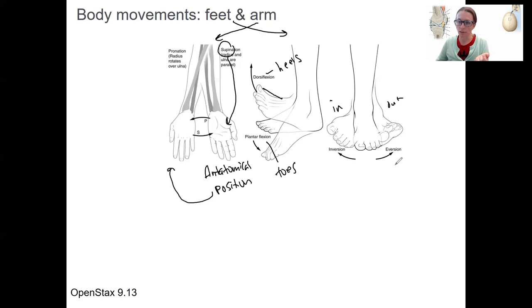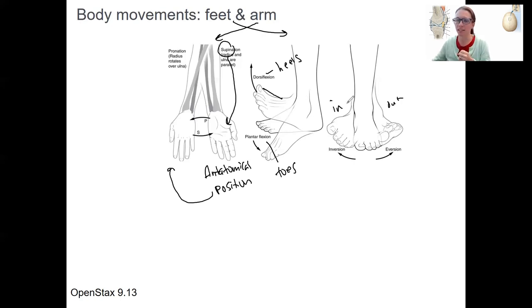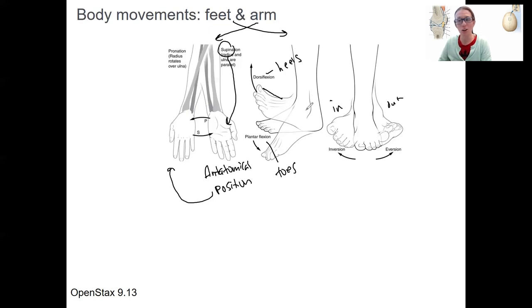It's useful to think about how a joint can have more than one movement — sometimes because it's multiaxial, sometimes because there's more than one joint within it. The foot is an example: it can hinge, but it can also do eversion and inversion even though it's not a ball-and-socket joint, because it has multiple joints within it allowing for different movements.